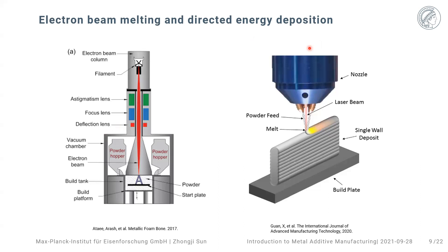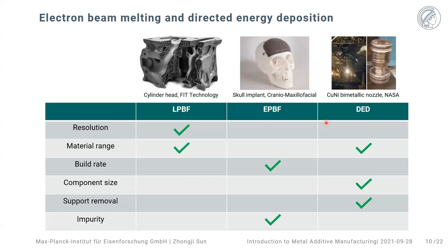For the Directed Energy Deposition process, the major difference compared to the previous two is that it does not need to lay down a layer of powder on the fabrication plate before starting. The powder comes out at the same time as the laser, which has the unique advantage of saving a lot of powder material.